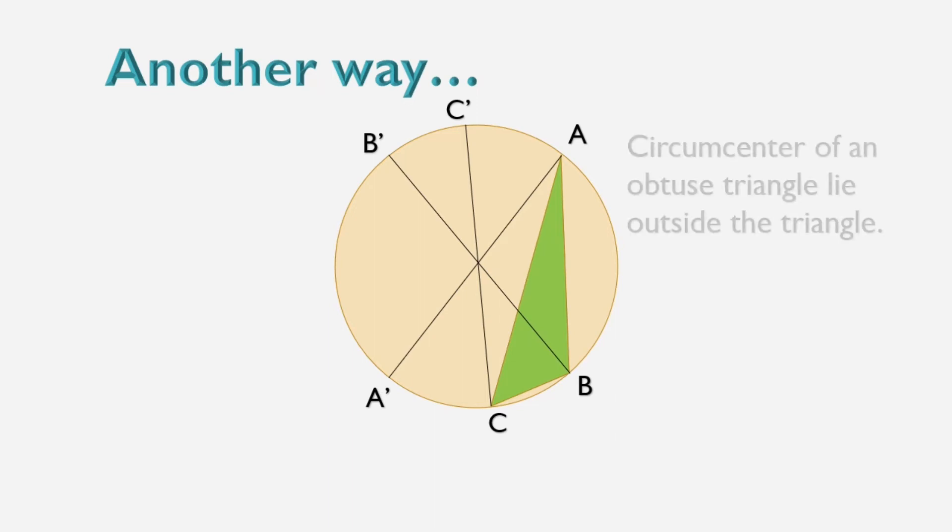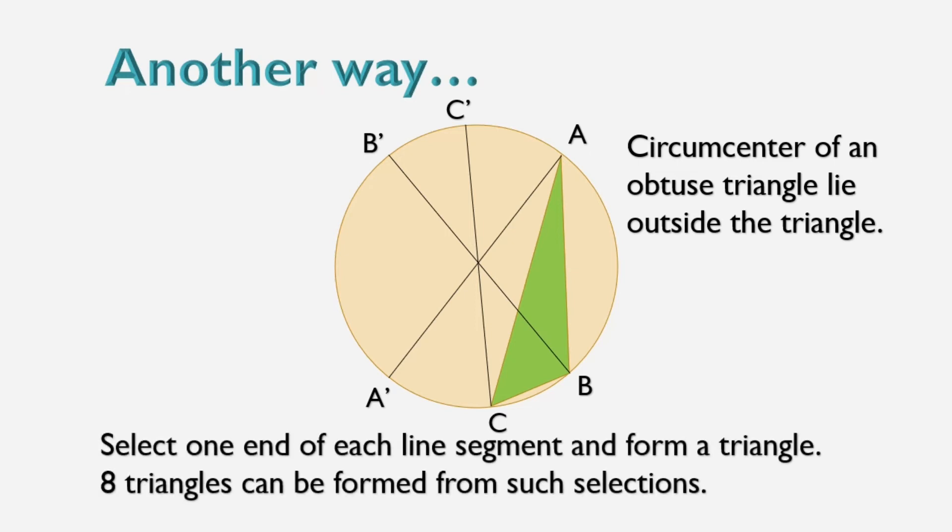Here is the property which we will use in our analysis that the circumcenter of an obtuse triangle lies outside the triangle. Now select one end of each line segment and form a triangle. Eight triangles can be formed from such selections.